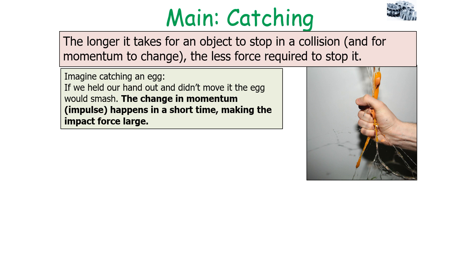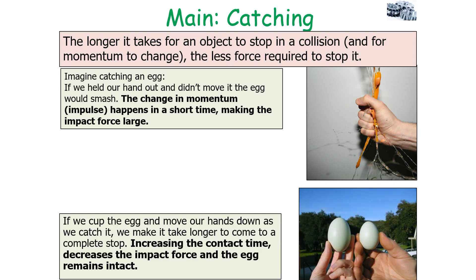Imagine you're trying to catch an egg. If you hold your hand out and didn't move it, the egg would smash. That's because the change in momentum, the impulse, takes place in a short time, making the impact force on the egg large. But if we cup the egg and move our hands down as we catch it, we make it take longer to come to a complete stop. This increases the contact time, decreases the impact force, and the egg remains intact.